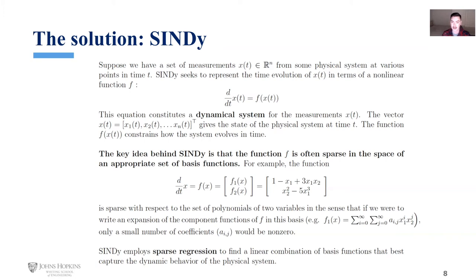So we can see this example on the screen as a great introduction of that. That system is sparse with respect to the set of polynomials of two variables in the sense that if you were to write an expansion out of the component functions of f in this basis, for example, you would do f_1(x) = sum a_ij x_1^i x_2^j, sum all those i and j from 0 to infinity. There will only be a small number of coefficients a_ij that would be non-zero. So CINDY can exploit that by using sparse regression to find a linear combination of basis functions that best capture the dynamic behavior of the physical system.